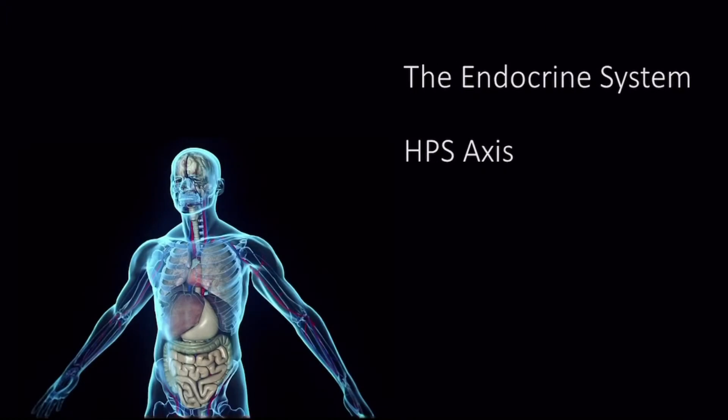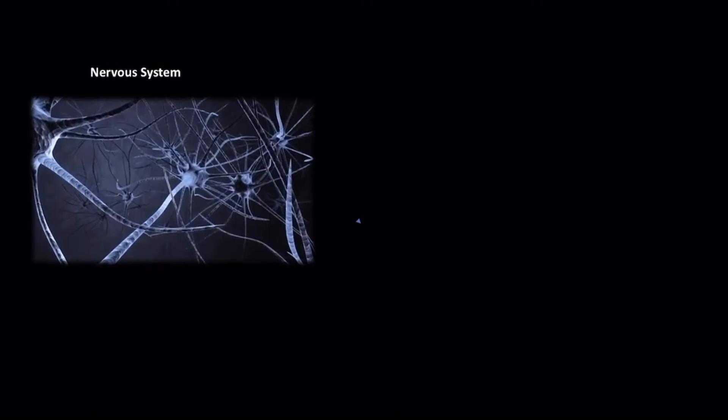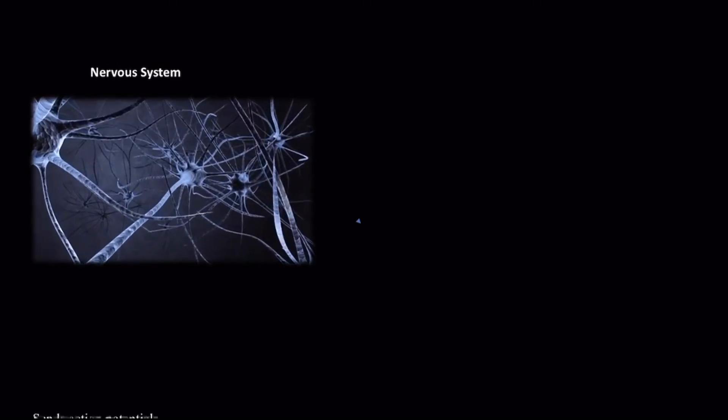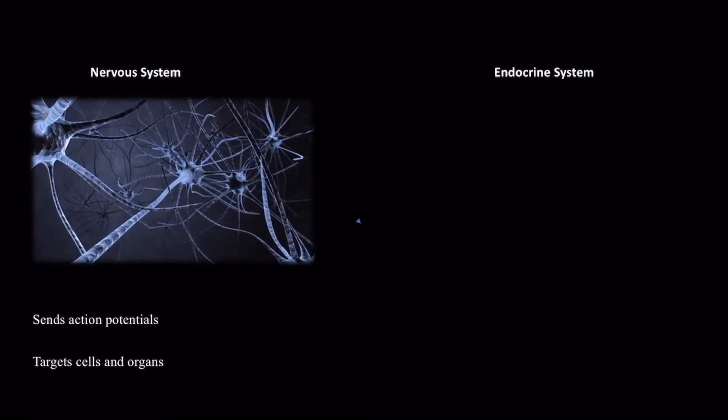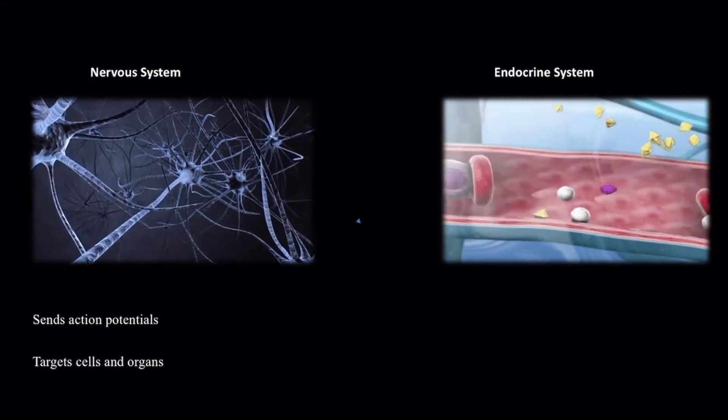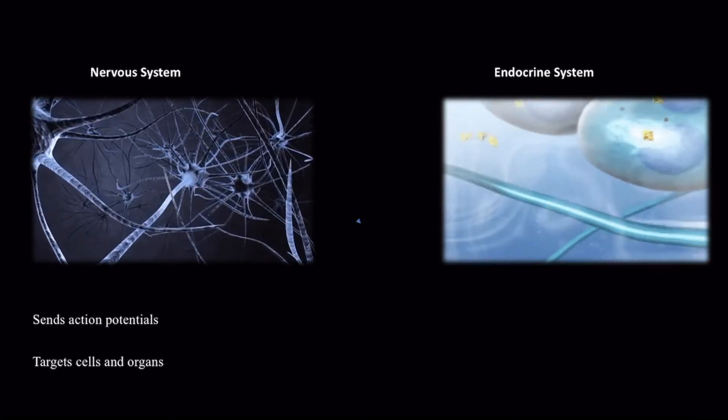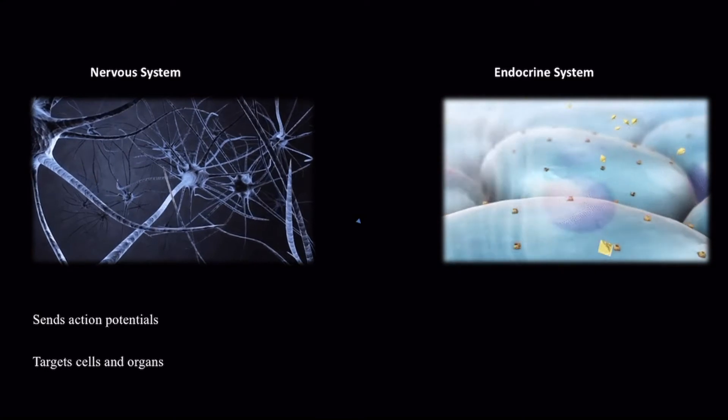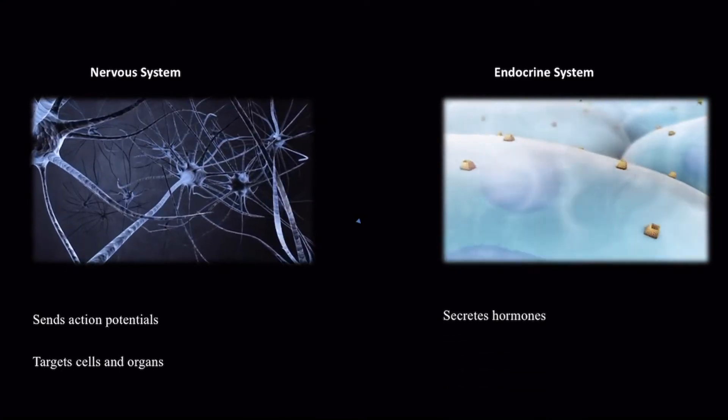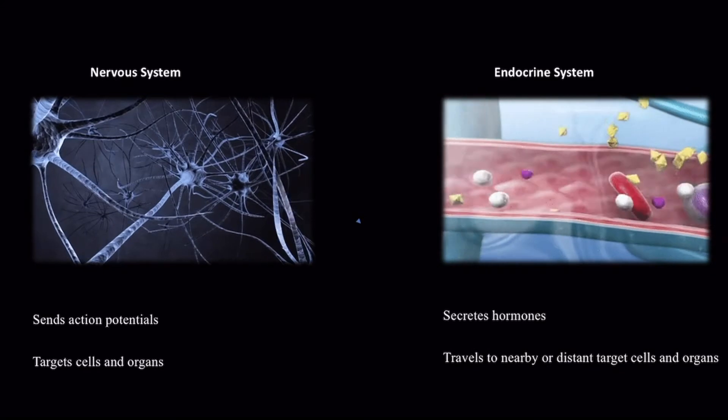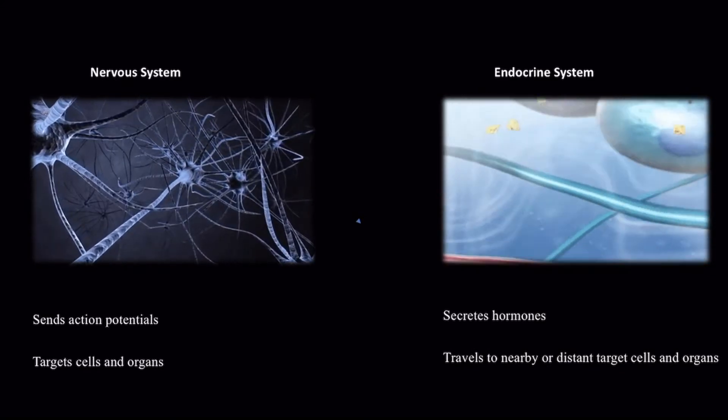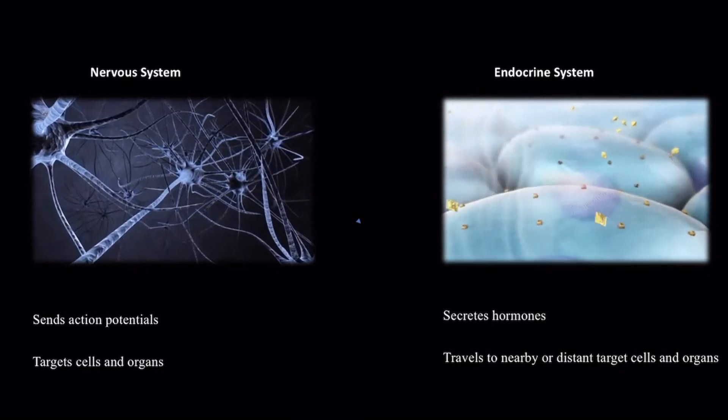A person's every move is executed by constant instructions produced by the nervous and endocrine systems. While the nervous system sends lightning-fast electrical signals called action potentials to target cells and organs, the endocrine system uses a slower and wider-scale approach to signaling. The endocrine system secretes chemical signals called hormones into the bloodstream, which then travel to nearby or distant target cells and organs. The results are long-lasting, widespread effects.